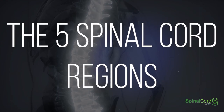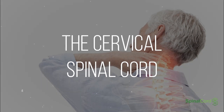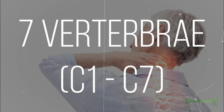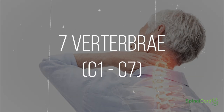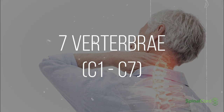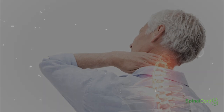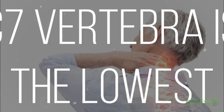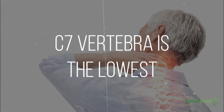The first of the five spinal cord regions is the cervical spinal cord. This is the topmost portion of the spinal cord, where the brain connects to the spinal cord and the neck connects to the back. This region consists of seven vertebrae, commonly referred to as C1 through C7. All spinal cord numbers are descending, so C1 is the highest vertebra, while C7 is the lowest in this region.